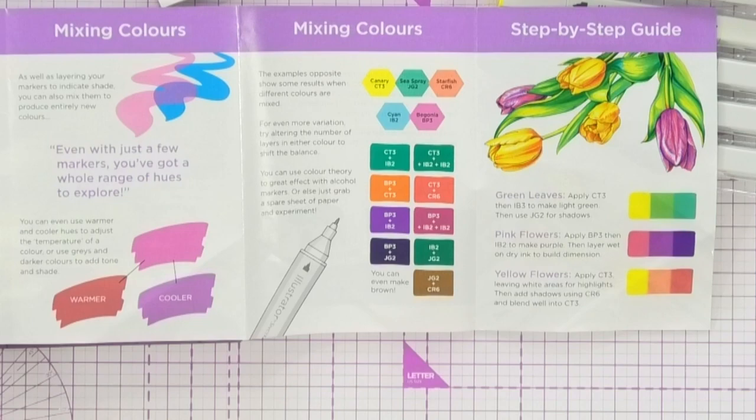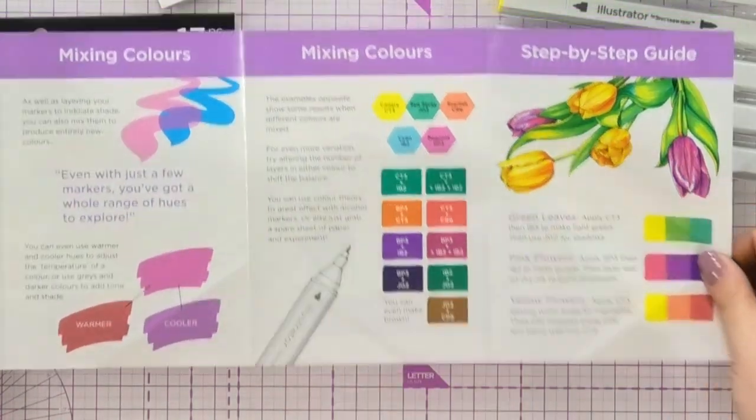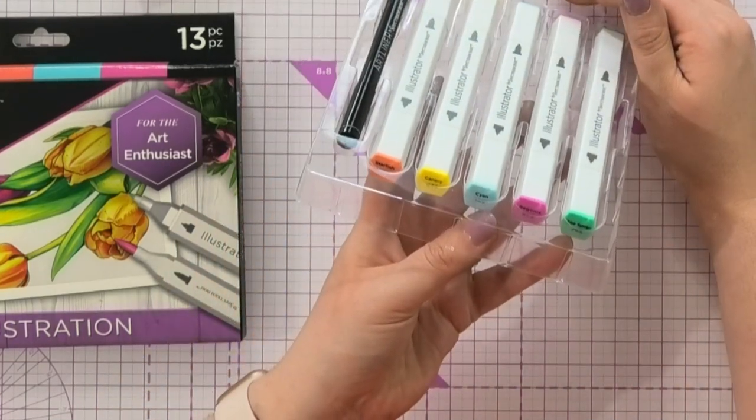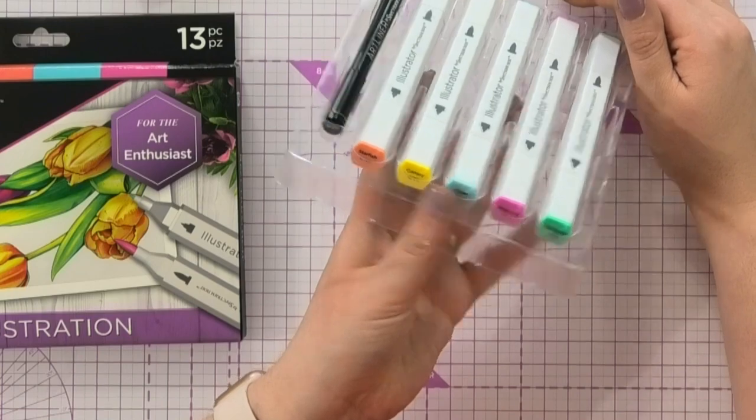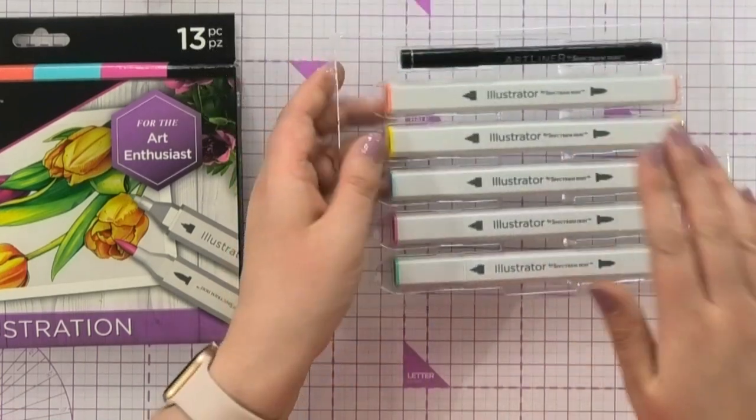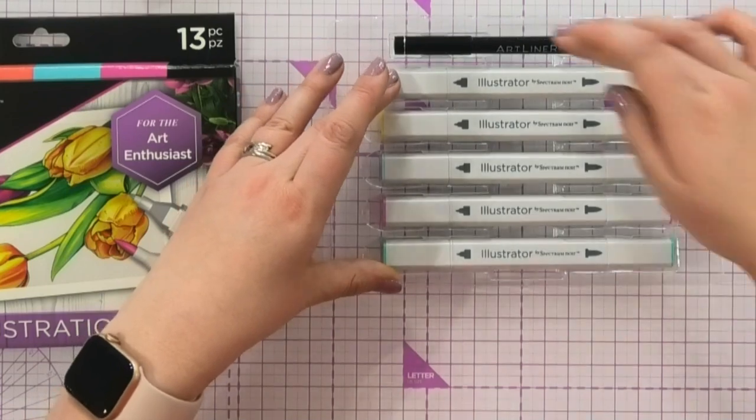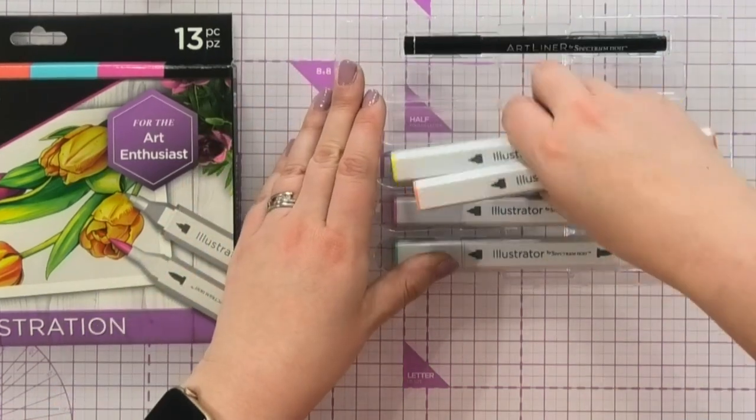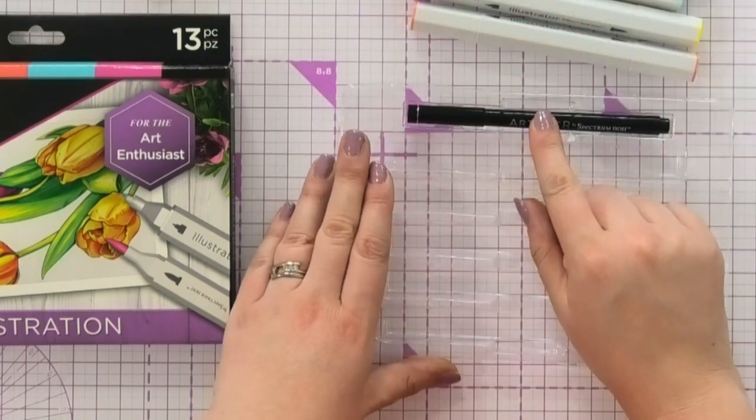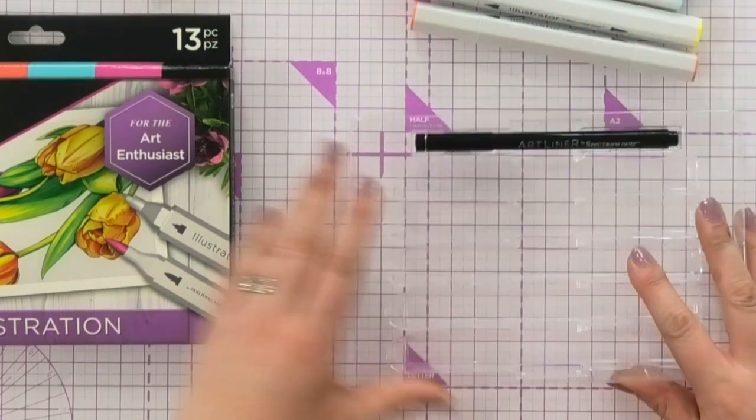And I'm going to try and give you a little taster of that now because in this set, pen-wise, we get five of our illustrator pens. So immediately the value for money in the set is exceptional because you couldn't buy three of these pens for the price of the whole kit. You get five of the brush markers and also our art liner, fine liner, if you want to do your own illustration and then be able to color it.